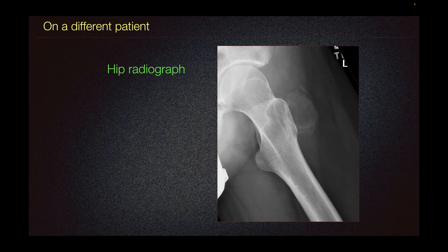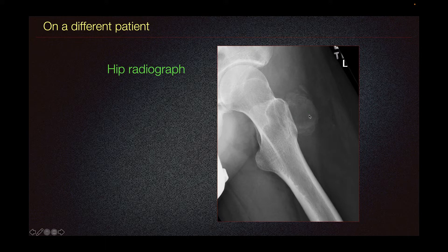This is a different patient. Here on the left hip radiograph, we can see this peripherally calcified mass with a lucent center, which is a typical finding of myositis ossificans in its later stages.